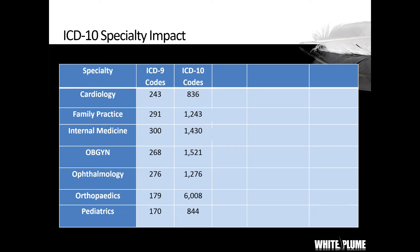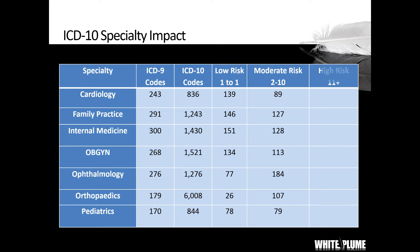When you convert those ICD-9 codes into ICD-10, you'll see a significant increase across every specialty. Orthopedics is the outlier — if you're orthopedics, physical therapy, physical medicine, or you see any sprains, strains, or fractures, your transition may be more difficult than some other specialties. Not all codes are translated equally, so we put them into different risk categories: low risk, moderate risk, and high risk. Low risk codes are those with one diagnosis code in ICD-9 and one in ICD-10. For most practices, about 40% to 50% of the codes they use day in and day out fit into that low risk category.